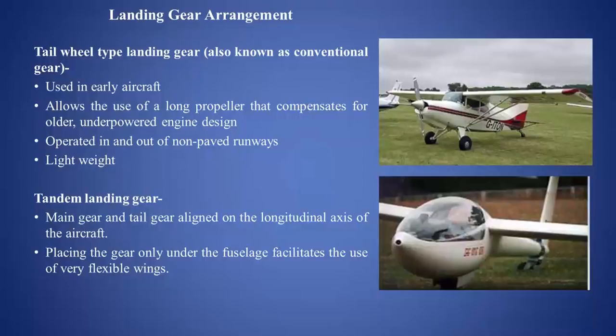In the second figure, you can see a glider with a tandem landing gear arrangement. It has a main gear and tail gear aligned on the longitudinal axis of the aircraft — from nose to tail there is a main wheel and a small tail wheel. Placing the gear only under the fuselage facilitates the use of very flexible wings, as the wheels are just under the fuselage.